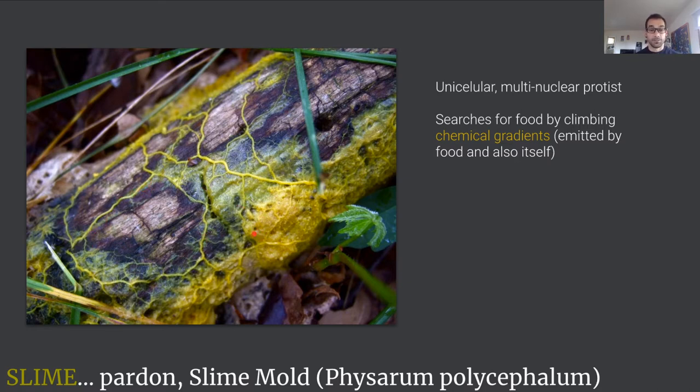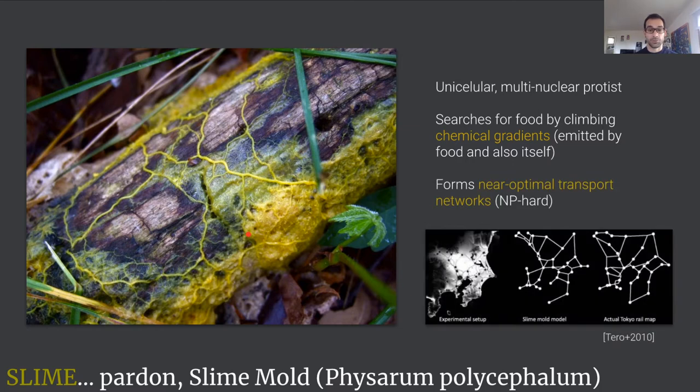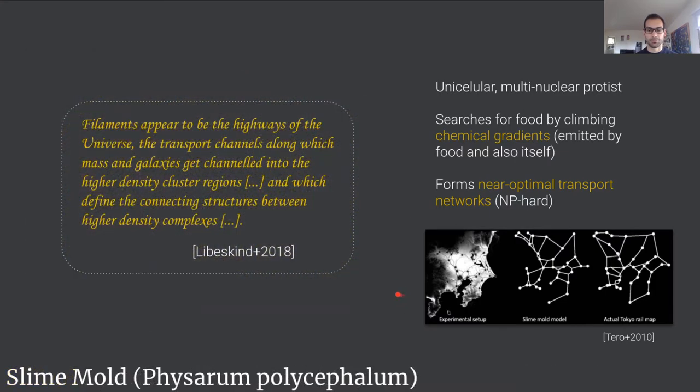It tries to interconnect all these sources of food by networks of filaments, which are basically tubes composed of its own tissue. By doing so it actually constructs a near-optimal transport network, as has been shown in many works in the past. For instance, here is a famous work from Terra et al where they fitted the slime mold to quite accurately reconstruct the Tokyo railway system.